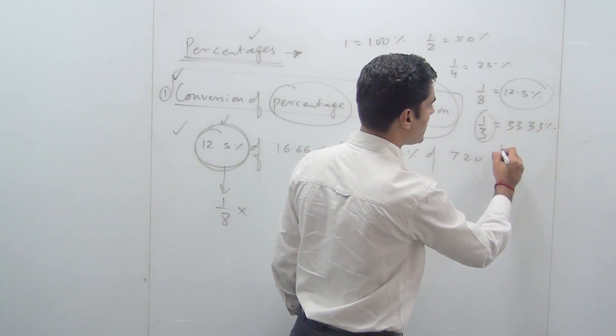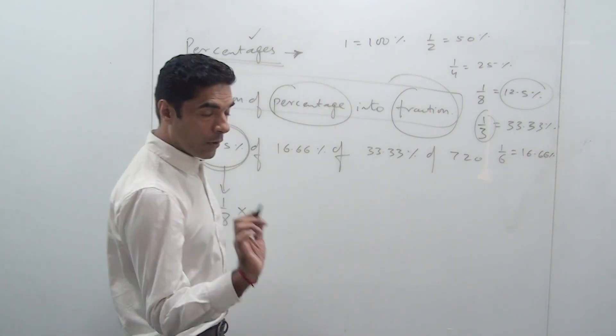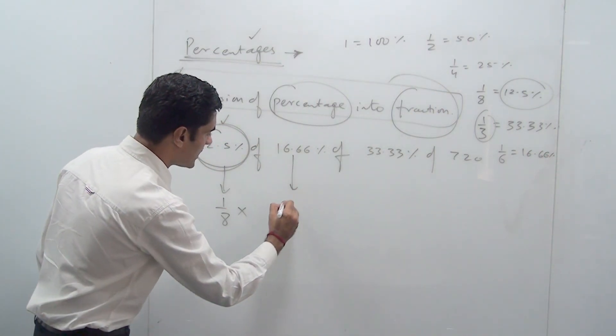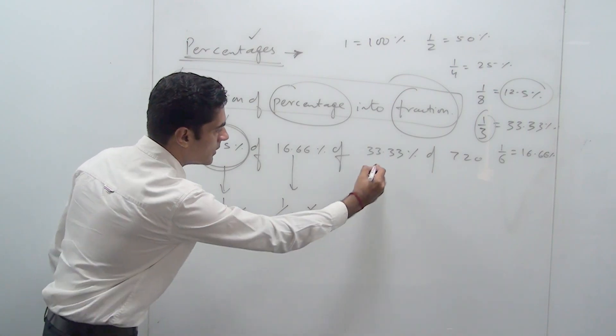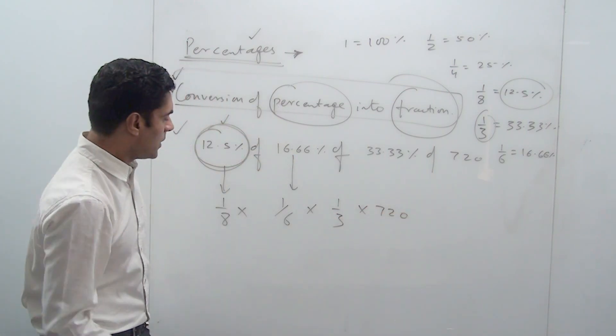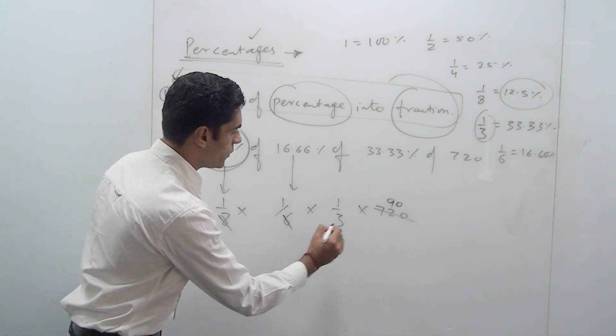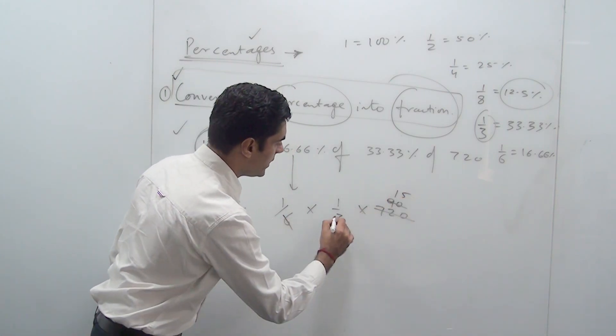That means half of 1/3 is 1/6, which is nothing but 16.66%. Now you can replace 16.66% with 1/6 times this. You already know that 1/3 times 720—8 times 9 is 72. If you solve this, it will come out to be 15, and 3 divides 15 five times, so your answer comes out to be equal to 5.